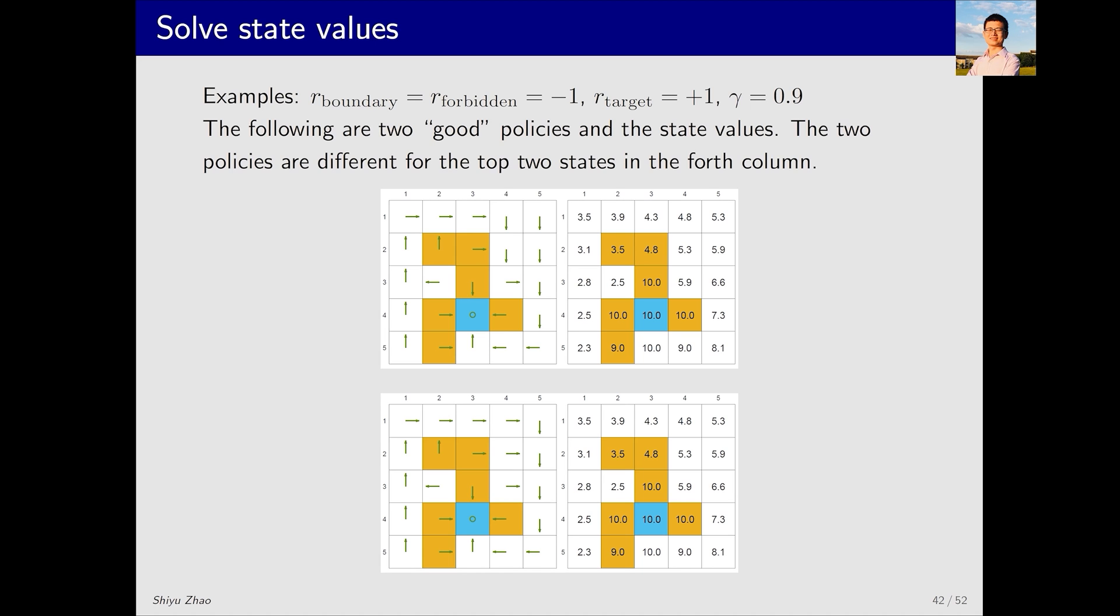Now let's look at a few examples. In this example, the rewards are as follows. Attempting to cross the boundary or entering the forbidden area results in a negative 1 reward, while reaching the target area grants a positive reward of plus 1. The discount factor γ is set to 0.9. First, let's consider two relatively good policies. For instance, this one. Why is this policy considered good? Intuitively, it does not attempt to cross boundaries or walls and does not enter the forbidden area. Starting from this point and following this policy would lead directly to the target area. The state values calculated using either the analytical expression or the iterative algorithm are all positive. An interesting observation, which we'll analyze further, is that the state values are higher for locations closer to the target area and lower for those farther away.